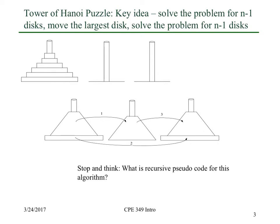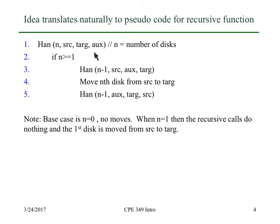Once you get the idea, it's fairly easy, and it shows the power of recursion — you don't need to worry about what happens to all the intermediate moves of the disks; they're going to magically be taken care of by the recursive program. And this idea translates fairly easily into pseudocode. So if we have our program here — Hanoi — it's going to have n disks on the source, it's going to try to move them to target, and it's going to use the middle spindle, which I'll call aux, and it's going to use that spindle to get them to target.